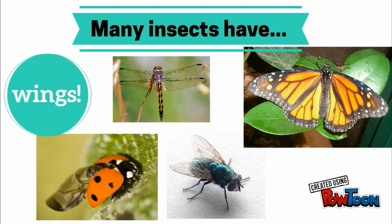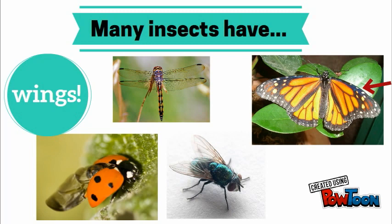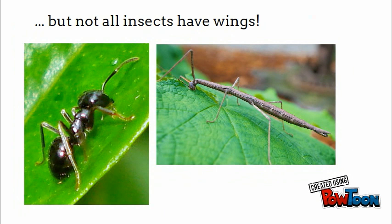Many insects have wings. They can have two wings like this fly, or four wings like butterflies. But not all insects have wings.